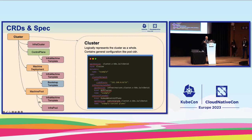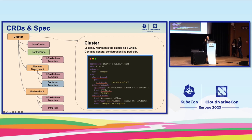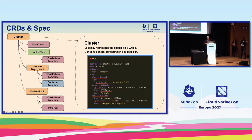Moving on to the CRDs and specs. CAPI has a number of CRDs that logically represent the parts of a Kubernetes cluster you're going to create, highlighted in orange. The cluster logically represents a cluster as a whole and contains general configuration information such as pod and service CIDR blocks. Importantly, the cluster is the root and owner of all other resource kinds, and collectively they form a tree of ownership. Most core CAPI resource kinds will also reference resource kinds from a provider — for example, the infrastructure ref and control plane ref.